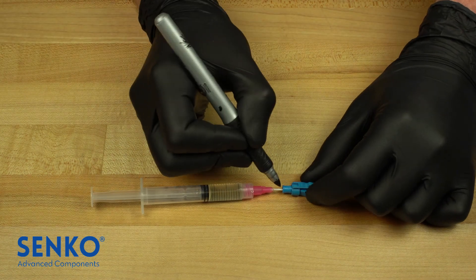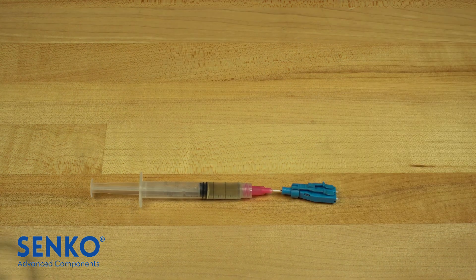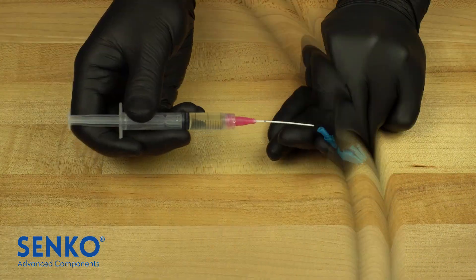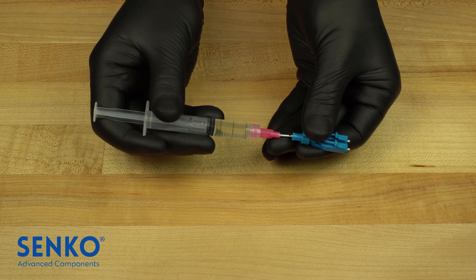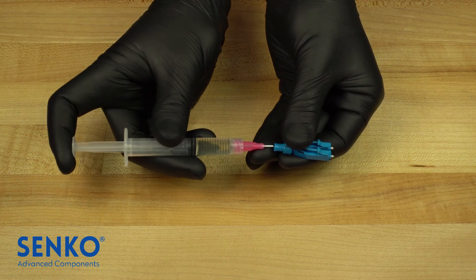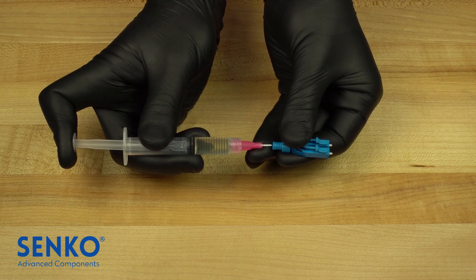Mark the tip where it stops in order to be able to tell if the tip is inserted all the way into the back of the ferrule. Insert a clean syringe tip into the tube and inject epoxy observing the tip of the ferrule for a small epoxy bead.